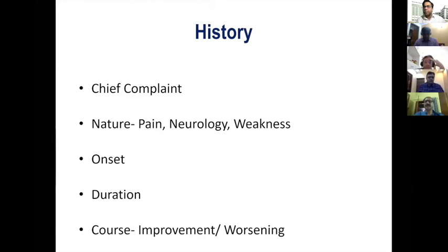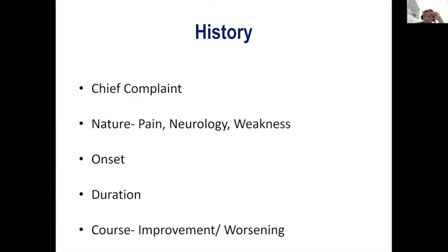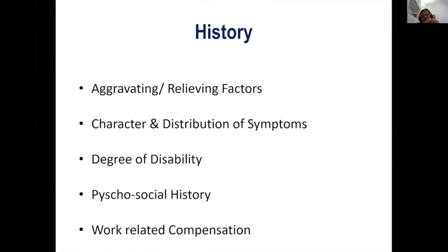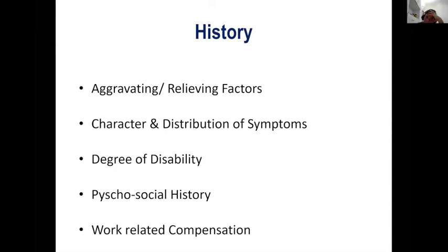We need to ask whether the course of those complaints is improving over time or worsening over time. That's important because if it is improving, we can be a bit assured, but if it's worsening, we need to investigate the patient further. Then we need to ask about aggravating and relieving factors — for example, in a case of disc prolapse, whether it gets accentuated with coughing or lifting weight, or relieved with lying down. We also need to ask about the character and distribution, whether it's neurological — neurological pain would follow the distribution of a nerve root — and the degree of disability perceived by the patient, whether they can go to work or are bound to bed.